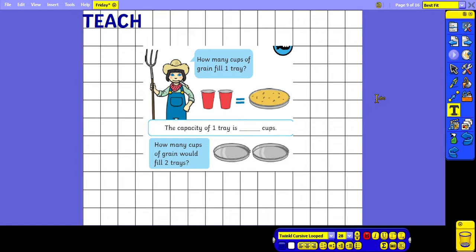Okay, so the farmer says how many cups of grain fill one tray? Looking at the picture, we can see that two cups of grain are equal to one tray, so the capacity of one tray is two cups. How many cups of grain would fill two trays? Well, if we know that two cups of grain fill one tray, we know that two cups of grain will fill this other tray. And to work out the total, we need to do two add two, which we know equals four cups.